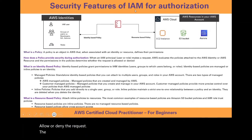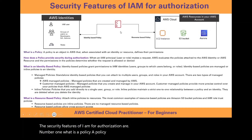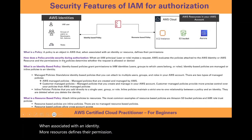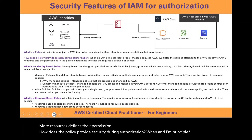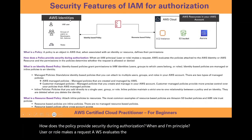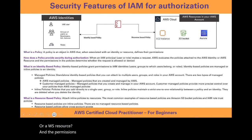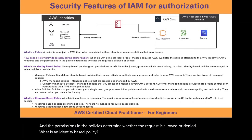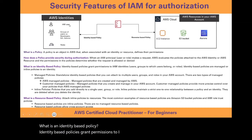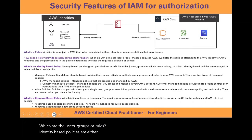The security features of IAM for authorization begin with policies. What is a policy? A policy is an object in AWS that, when associated with an identity or resource, defines its permissions. When an IAM principal — a user or role — makes a request, AWS evaluates the policies attached to the AWS identity or AWS resource, and the permissions in the policies determine whether the request is allowed or denied. Identity-based policies grant permissions to IAM identities, which are the users, groups, or roles. Identity-based policies are either managed or inline policies attached to an identity.